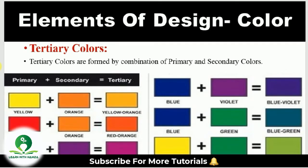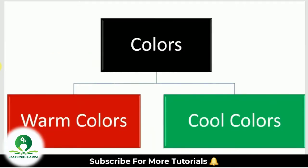Tertiary colors are those obtained by the combination of a primary and a secondary color. For example, when we mix yellow, which is a primary color, and orange, which is a secondary color, the tertiary color yellow-orange is obtained. Similarly, if we mix red and orange, red-orange is obtained. You can see a table of tertiary colors here — these are the three categories of the color wheel.